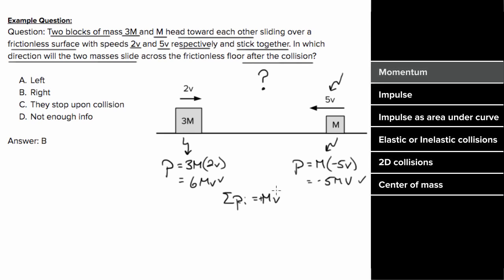So the total initial momentum of this system would be 6mv plus negative 5mv, which is 1mv. And that's positive, which means the total momentum initially is to the right. And that means after the collision, the total momentum will also have to be to the right. And the only way that could be the case, if these two masses join together, is for the total combined mass to also move to the right.